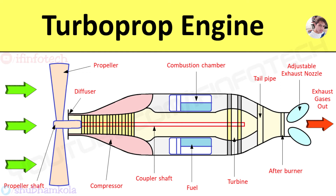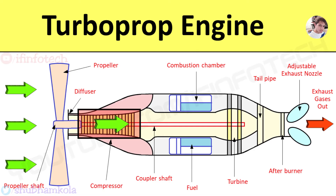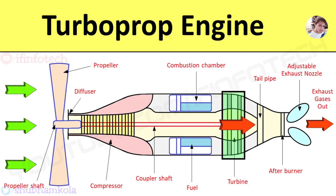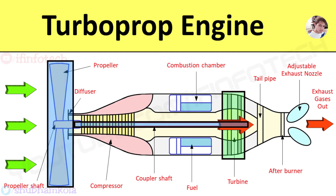In the turboprop engine, air enters from the diffuser, then passes through the compressor where temperature and pressure increase. The combustion chamber allows constant pressure burning of fuel, leading to high-pressure exhaust gases. These gases expand in the turbine, which gives power to run both the compressor and the propeller.